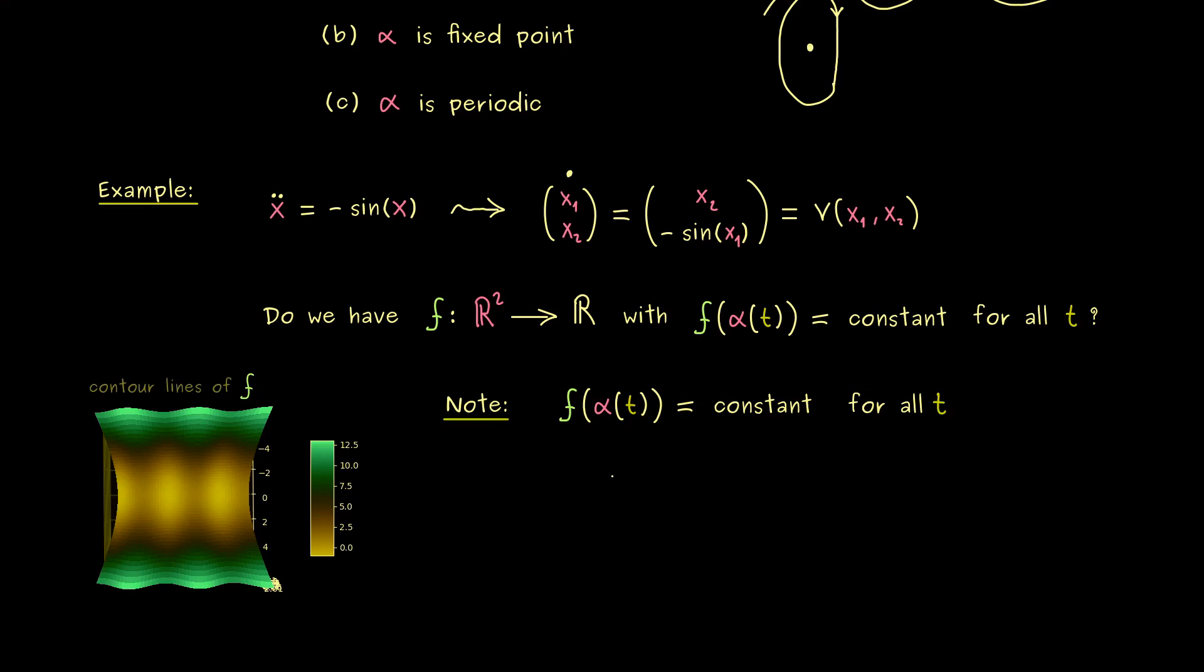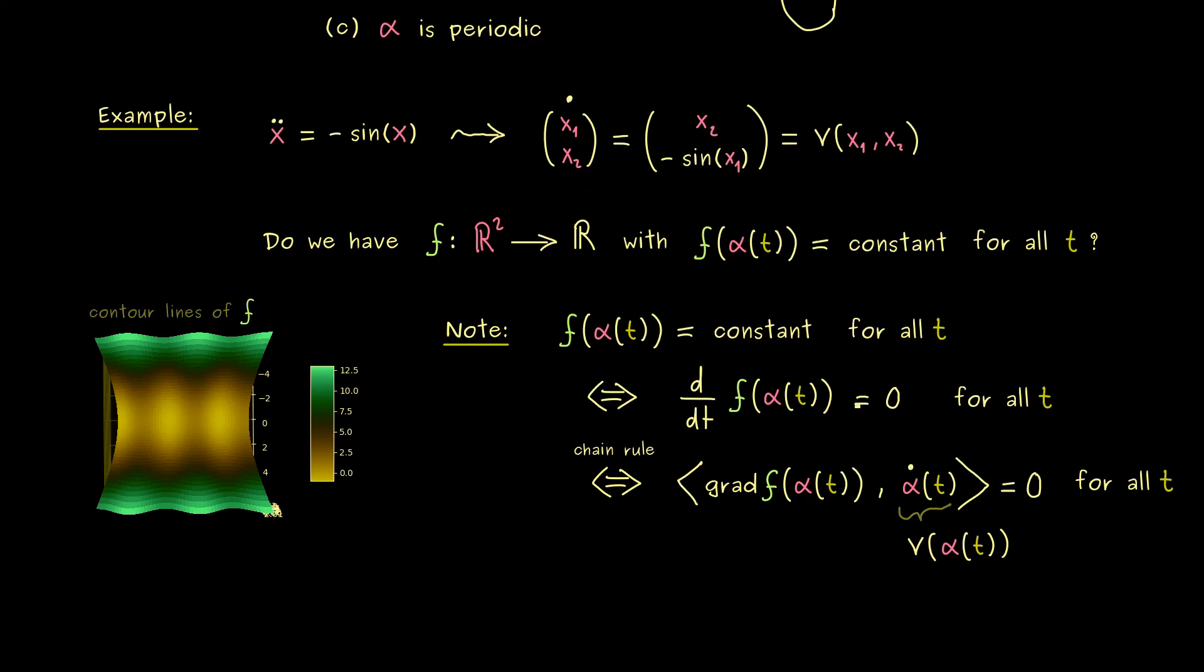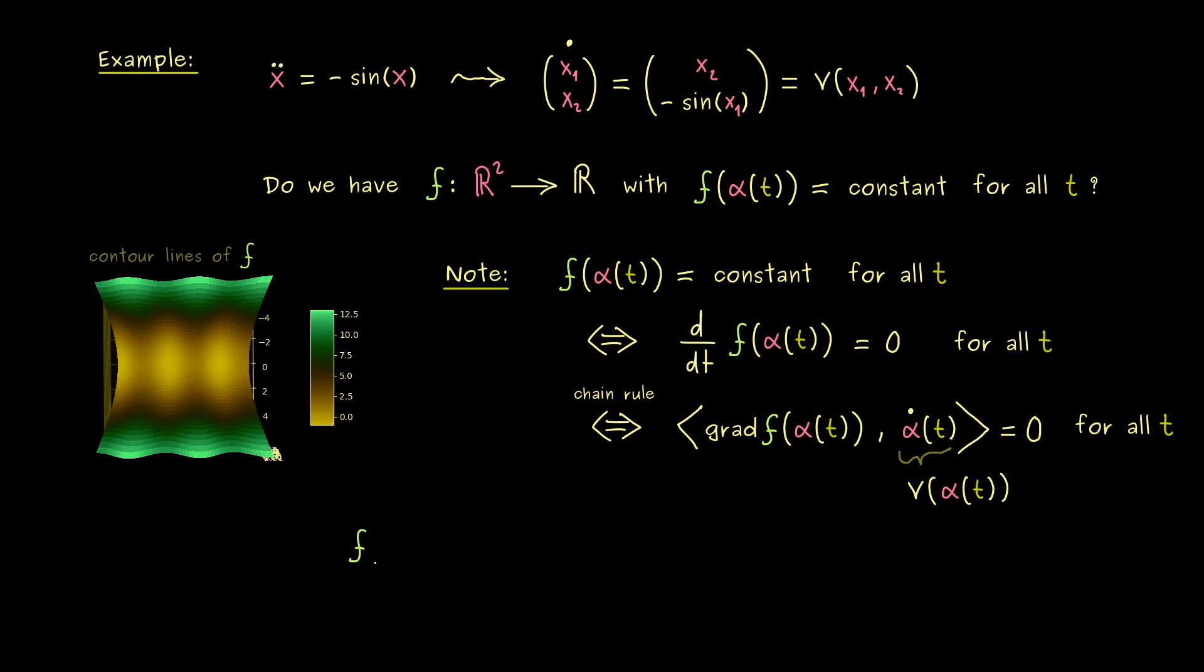Now the fact that this here is constant for all t is equivalent to the claim that the derivative of this function is equal to zero for all t. So you see we have to assume some differentiability properties as well. However in that case we can simply apply the chain rule. Which means we have the standard inner product of the gradient of f together with the inner derivative which is given as alpha dot. And there what we can use is that alpha is a solution of our ODE. This implies that alpha dot is equal to v of alpha. So this is exactly what our solution of the differential equation does. So in summary we can say what we have to find here is a function f whose gradient is perpendicular to v. And this is not too hard because we can try some things out.